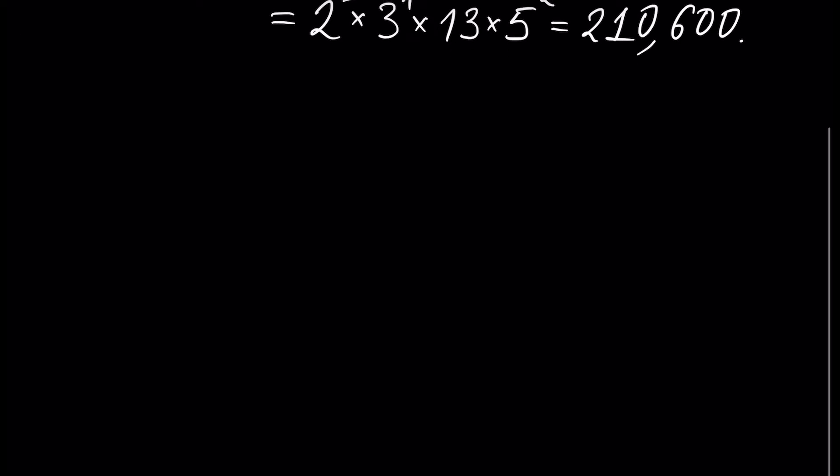Least common multiple of several numbers is the smallest multiple of each of them. A common multiple of several numbers is a multiple of each of them.